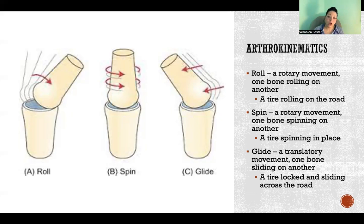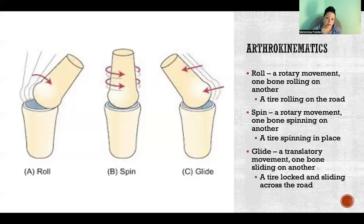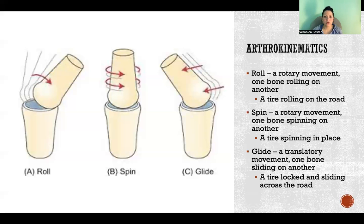Spin is another rotary movement, but it's where we have a bone that's spinning relative to another bone. As seen in the picture here, you can have one bone that's relatively stationary and another that is spinning in place on top of that other bone. You see that in pivot joints, for example. A practical example would be a tire spinning in place — maybe you're in the mud and not getting enough friction, so the tires are spinning rather than rolling and moving forward.